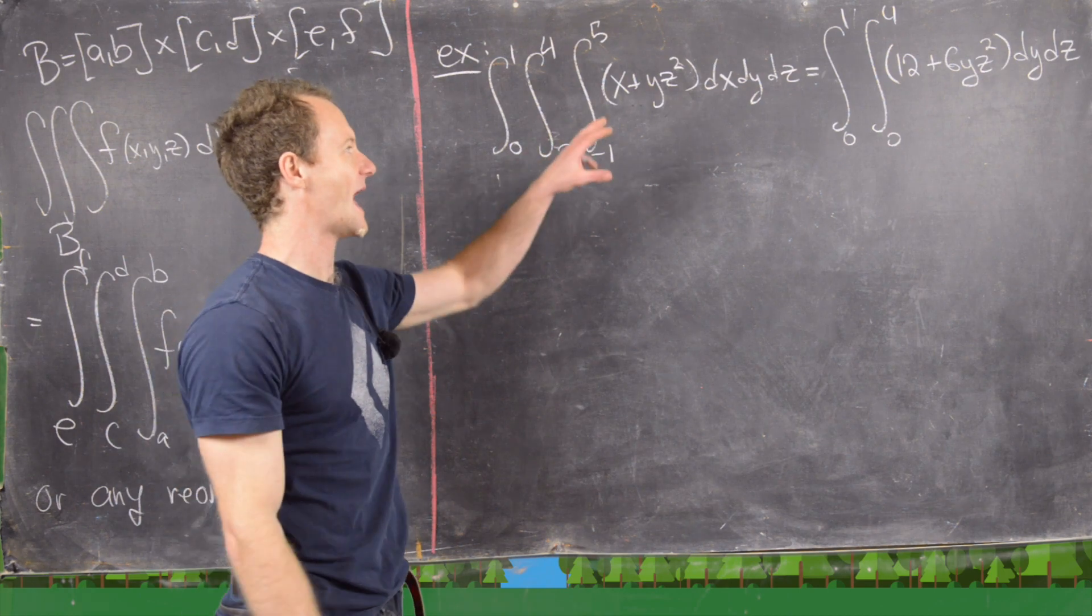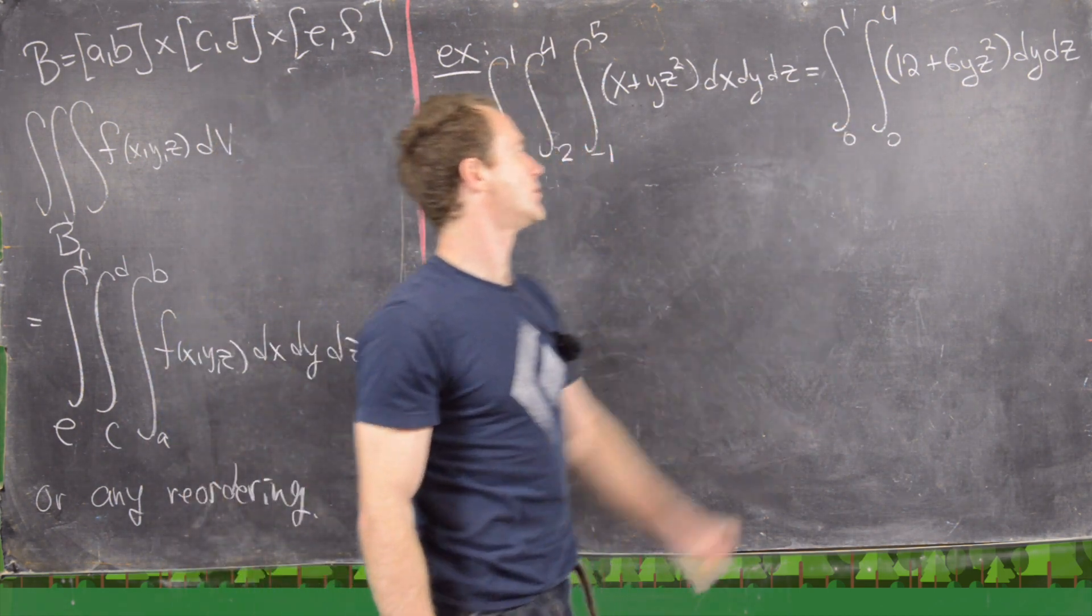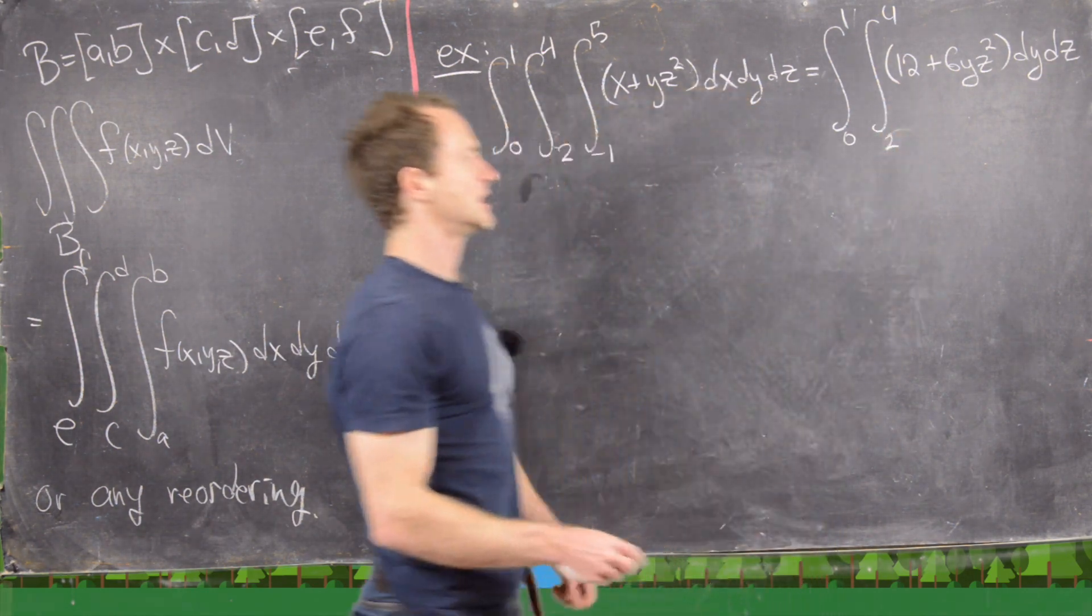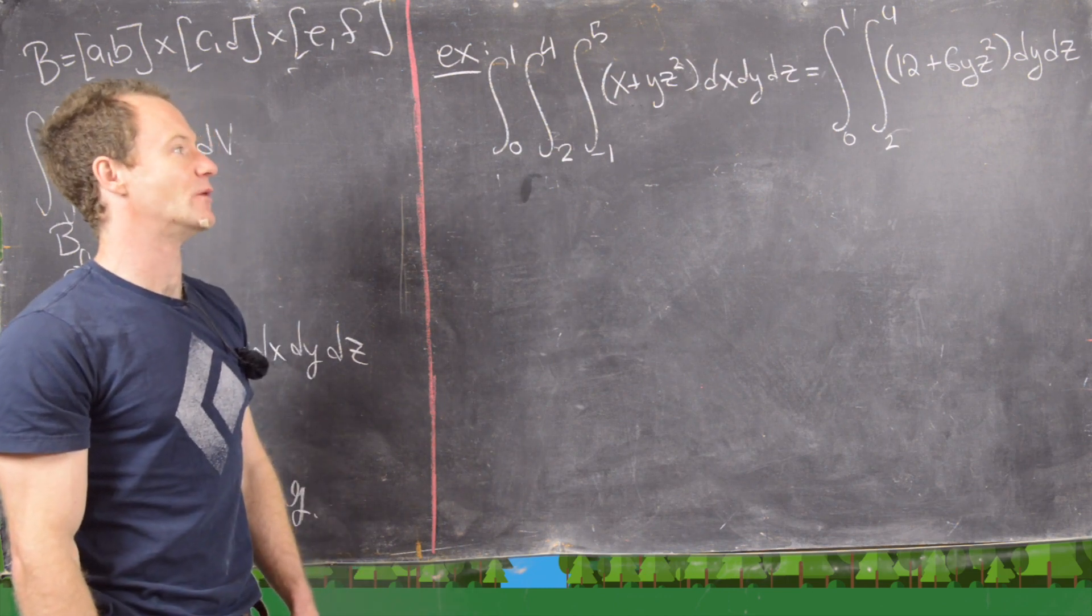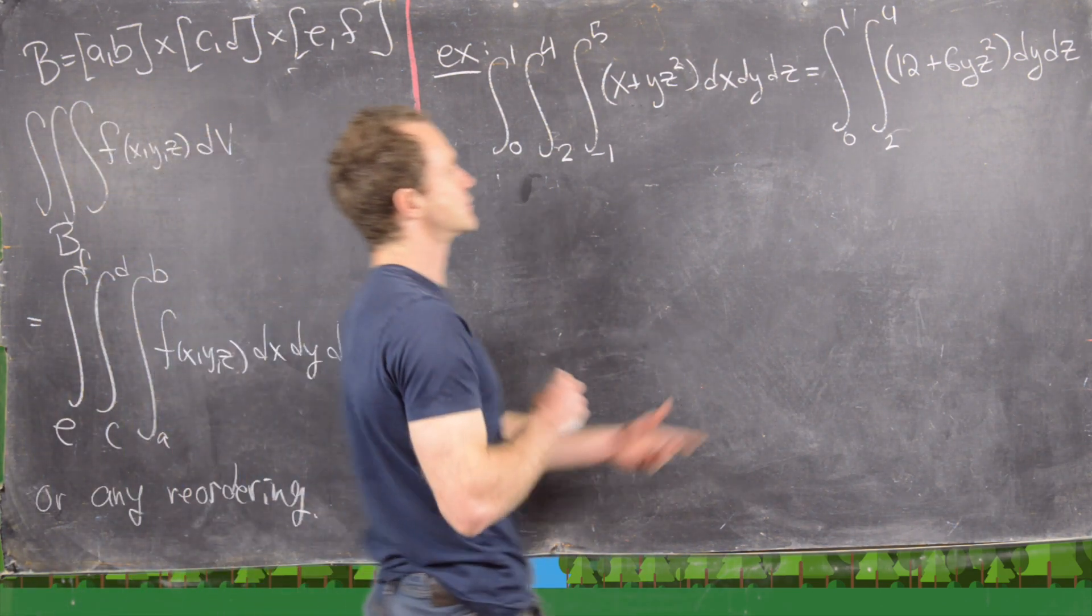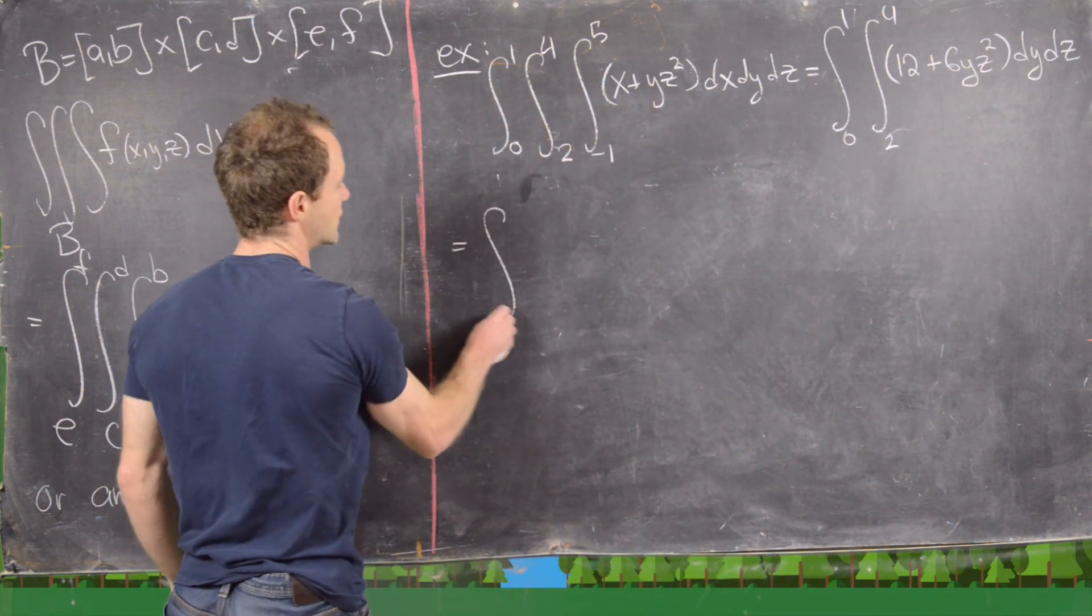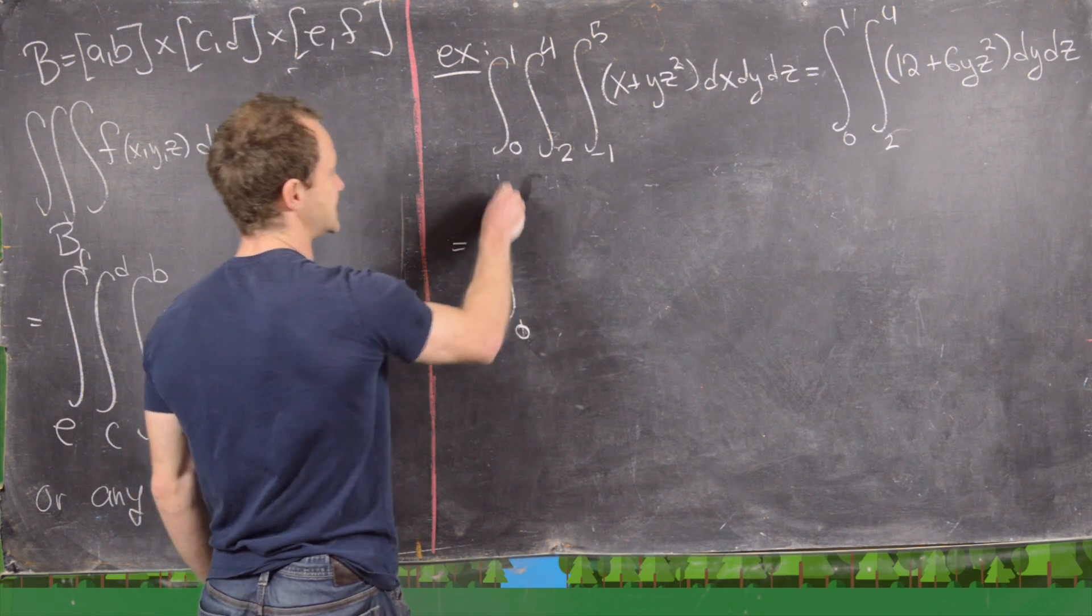So on the last board, we did our inner x integral and we reduced this triple integral to a double integral over a rectangular region. So let's continue on. So notice our inner integral at this point is a y integral. So we need to take the antiderivative of all of this stuff with respect to y.